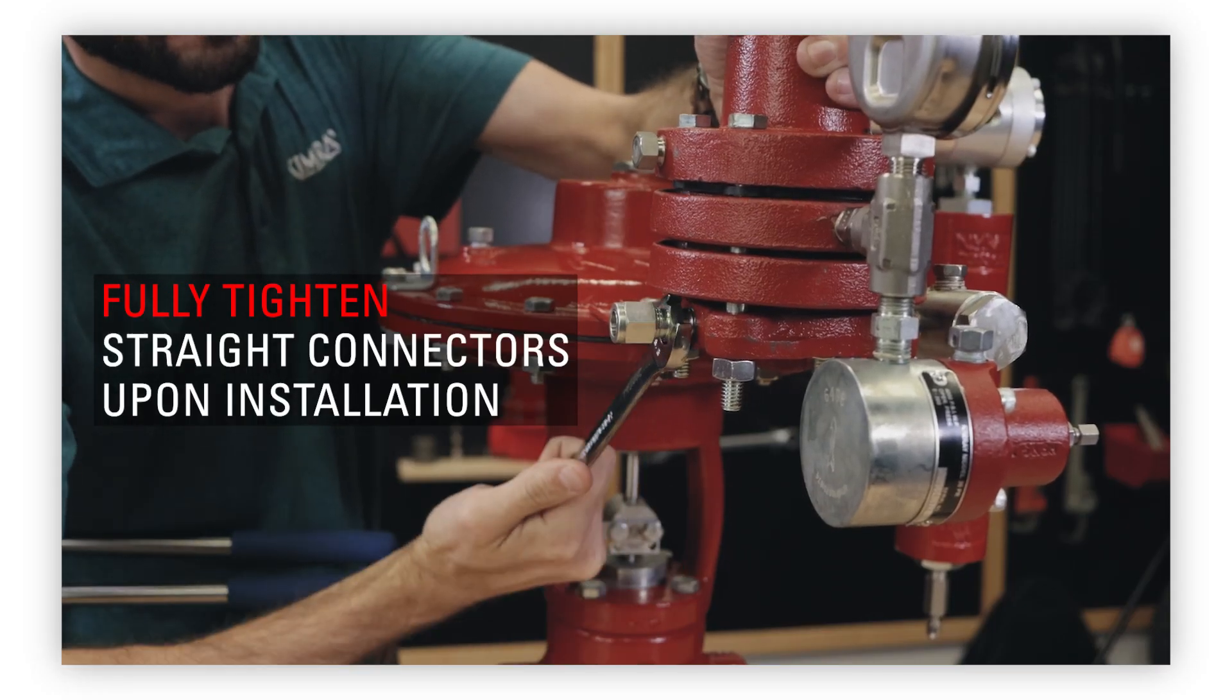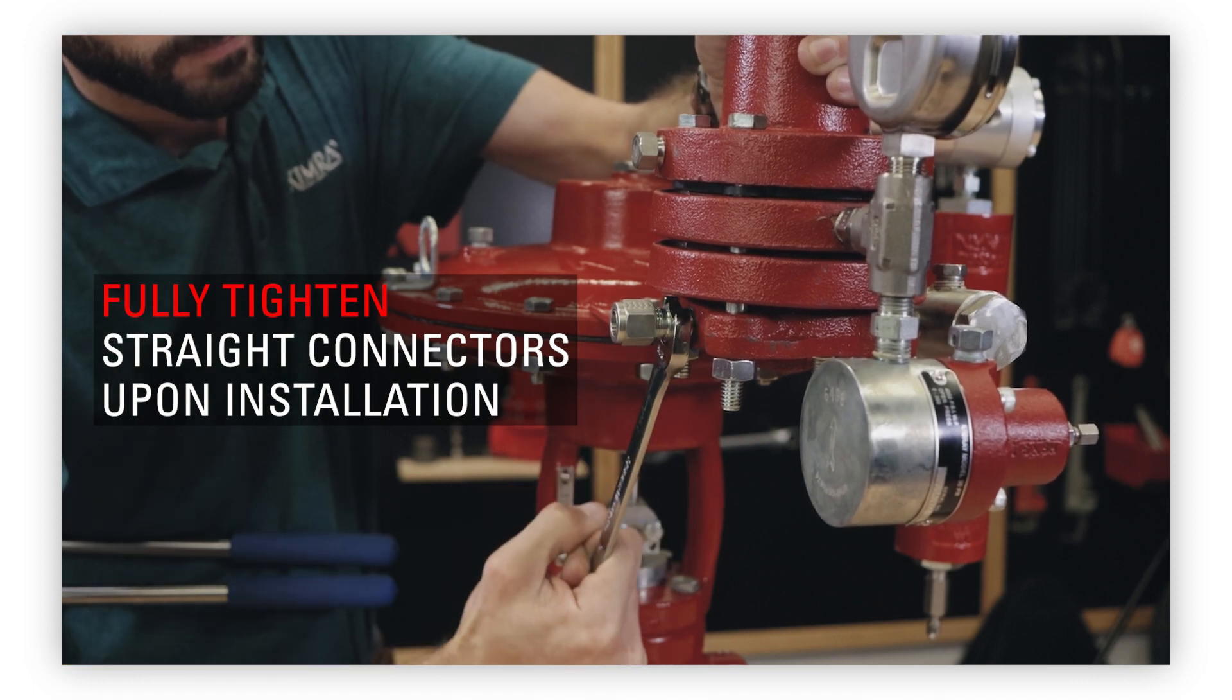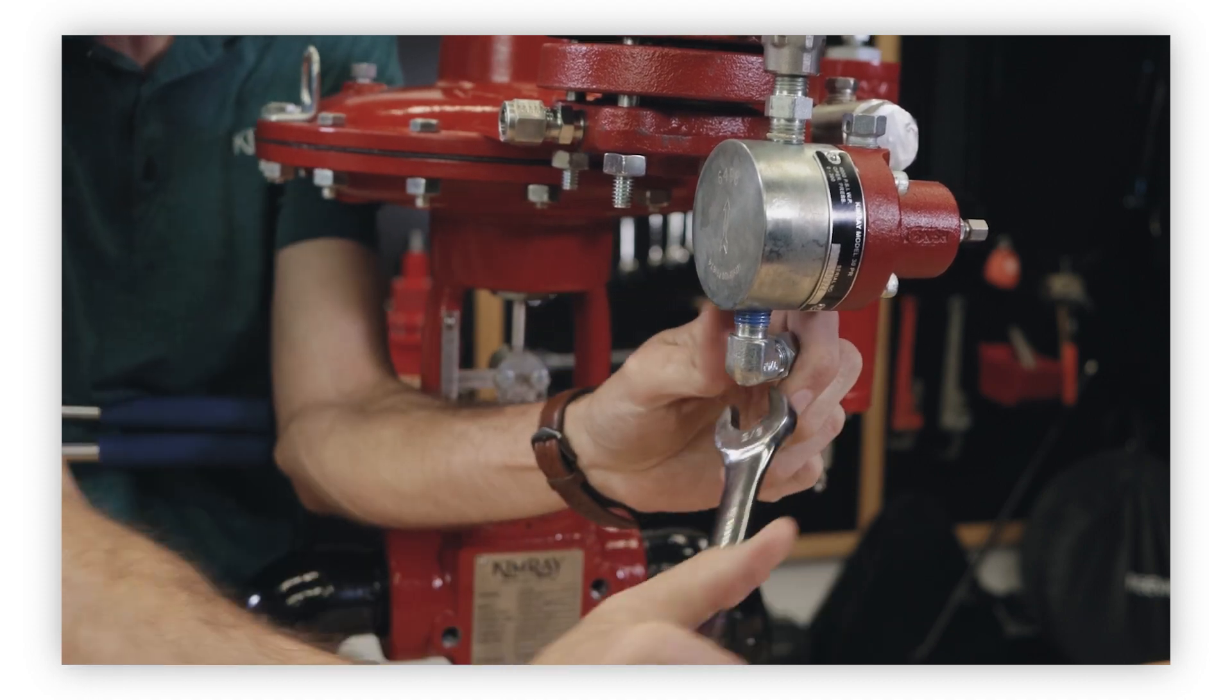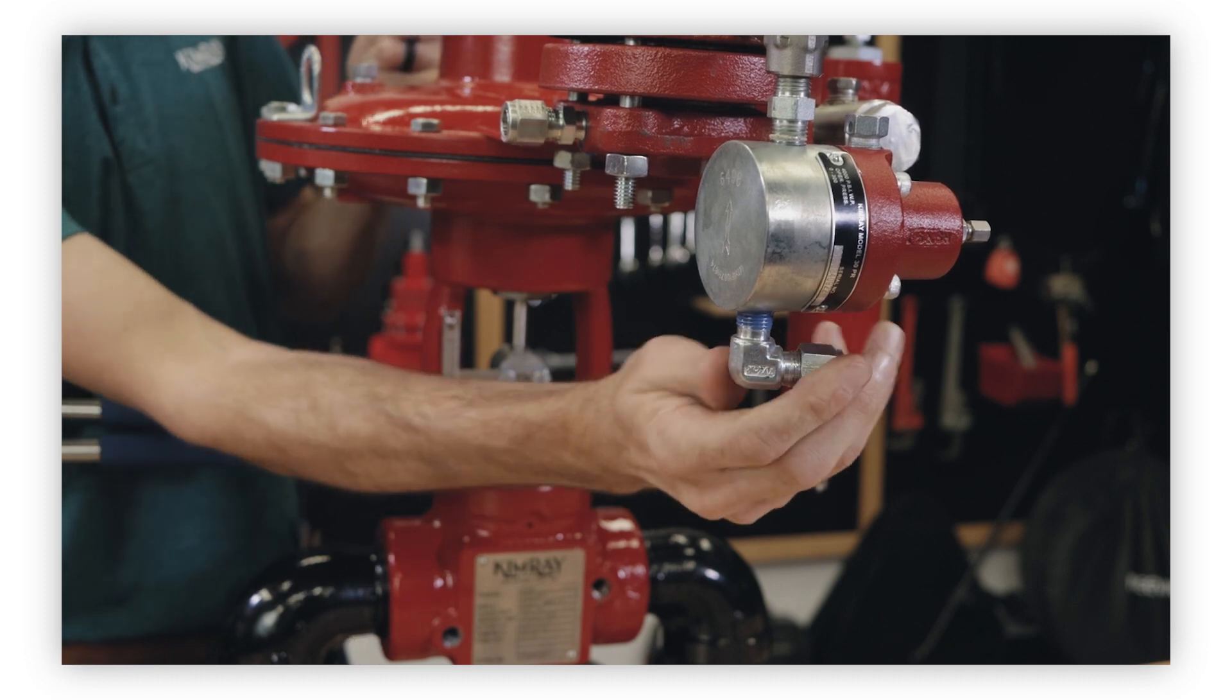If you're installing a straight connector, you can fully tighten it when you install it since there's only one way the tube can go in. However, to give yourself a little bit more flexibility, don't fully tighten any 90 degree elbow fittings until the tubing has been installed.